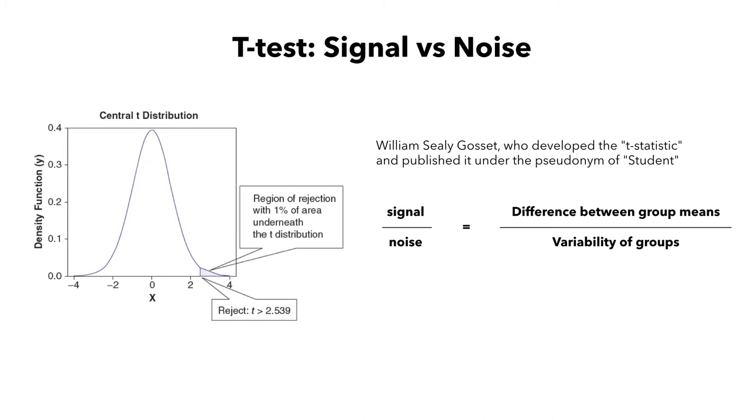A t-test is a type of inferential statistic used to determine if there is a significant difference between the means of two groups. A t-test is used as a hypothesis testing tool, which allows testing of an assumption applicable to a population.